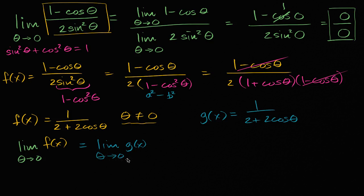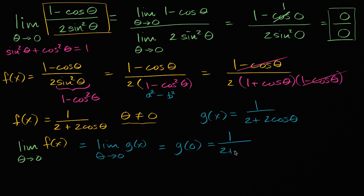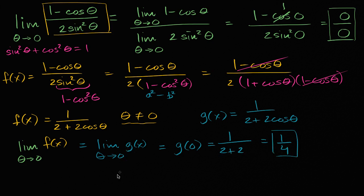So the limit as theta approaches zero of g of x — since g of x is continuous at zero — we can just substitute: that equals g of zero, which equals one over two plus two times cosine of zero. Cosine of zero is one, so it's one over two plus two, which equals one-fourth. And we are done.